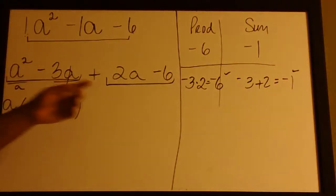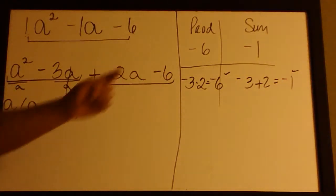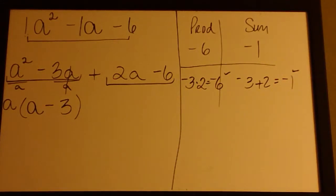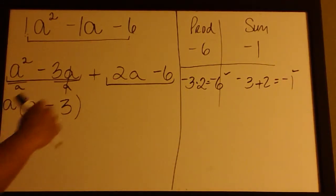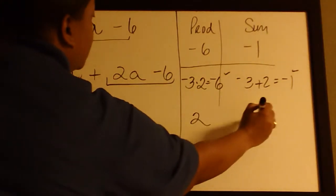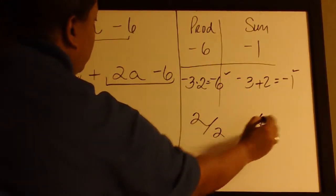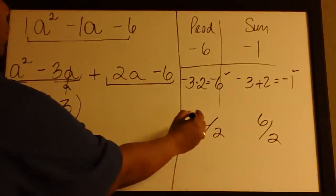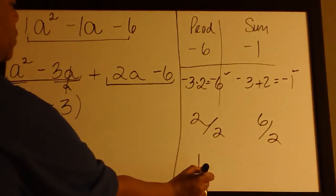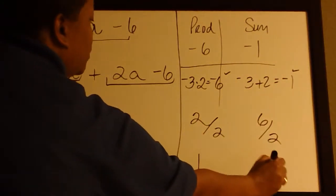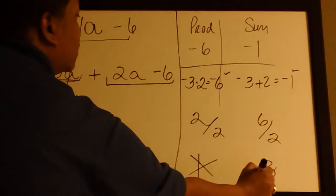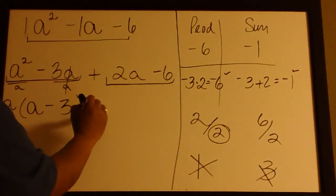Here a is not common to both terms so will not be part of the GCF, but there is a GCF between 2 and 6. 2 divided by 2 is 1, 6 divided by 2 is 3, and the GCF is 2.